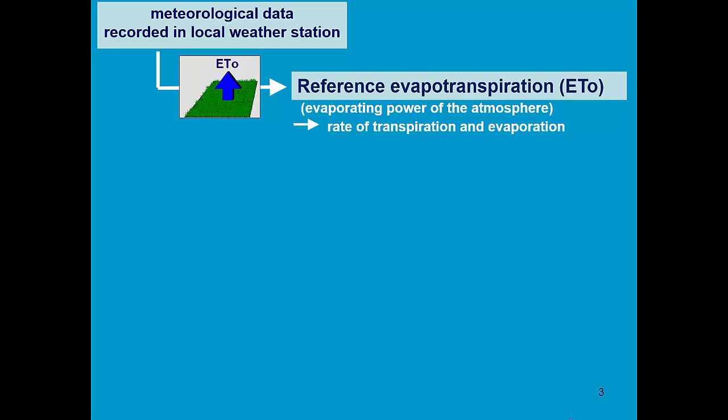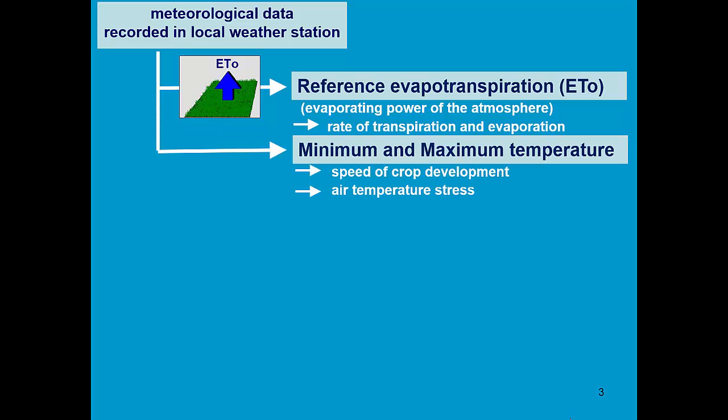Next to ET node, AquaCrop also requires minimum and maximum air temperature. It is required to calculate growing degree days, which determines the speed of crop development. There are also cold and heat stresses in AquaCrop, which affects crop yield and biomass production. ET node and minimum and maximum temperature can be entered as daily, 10-daily, or monthly data.